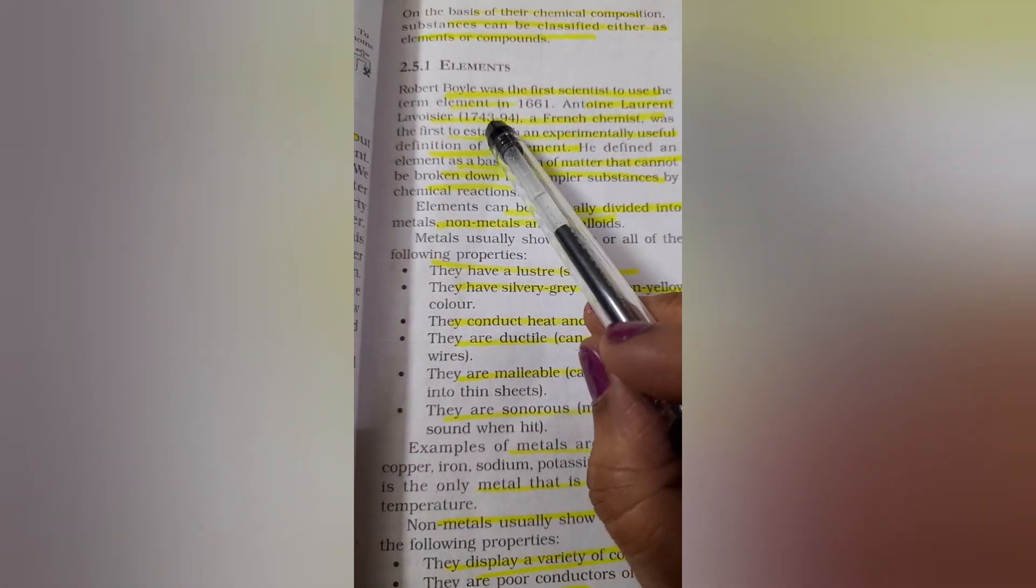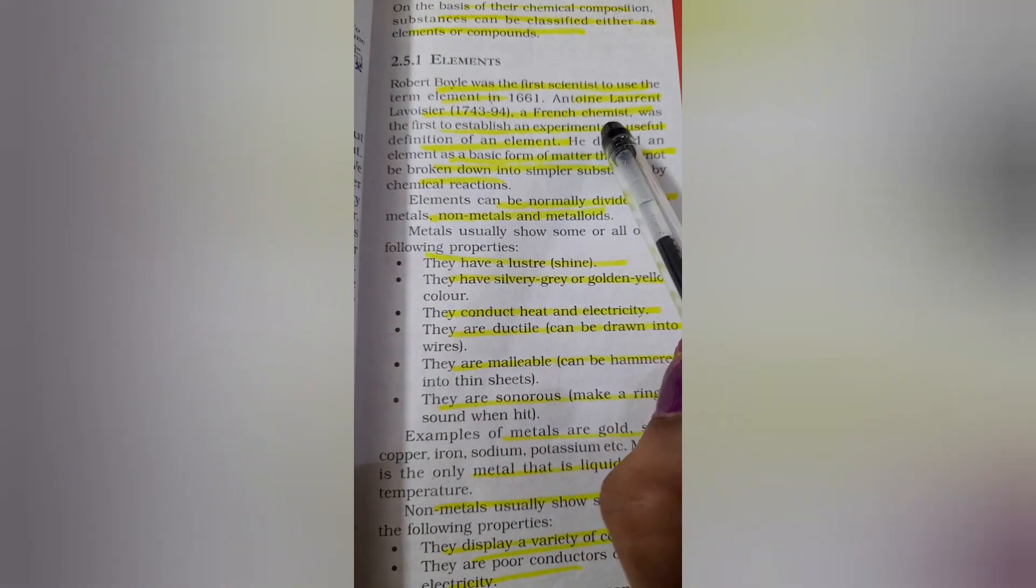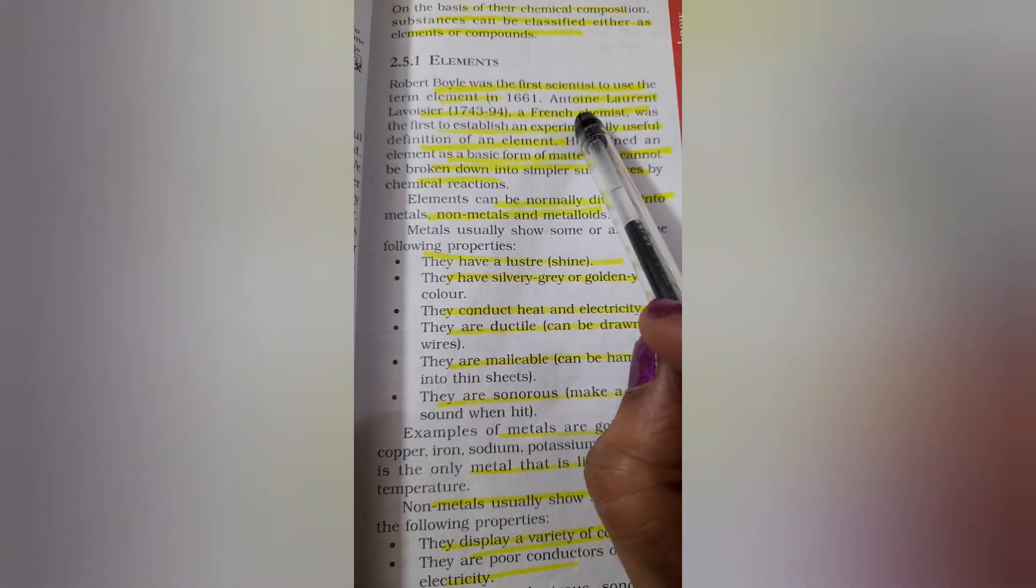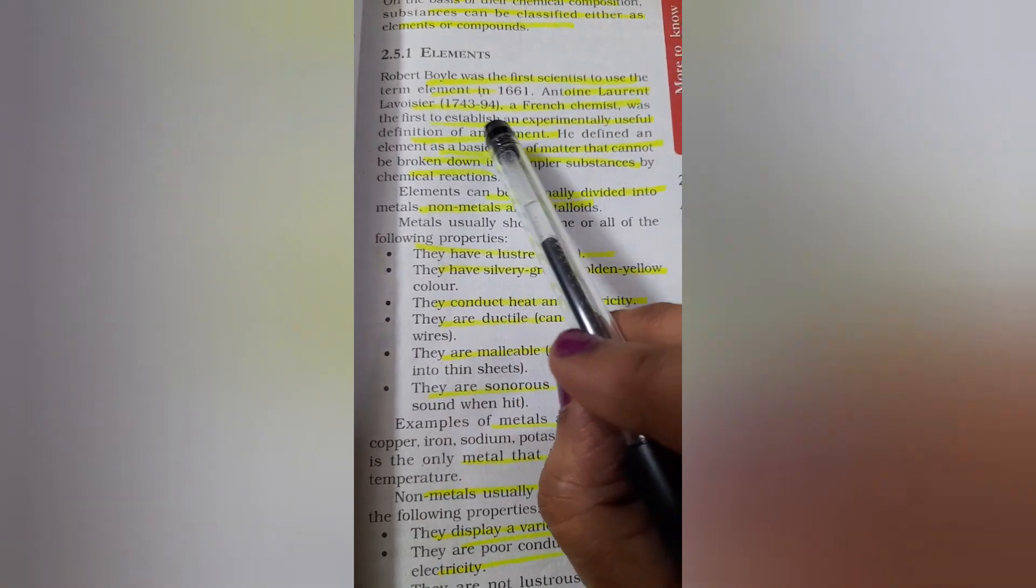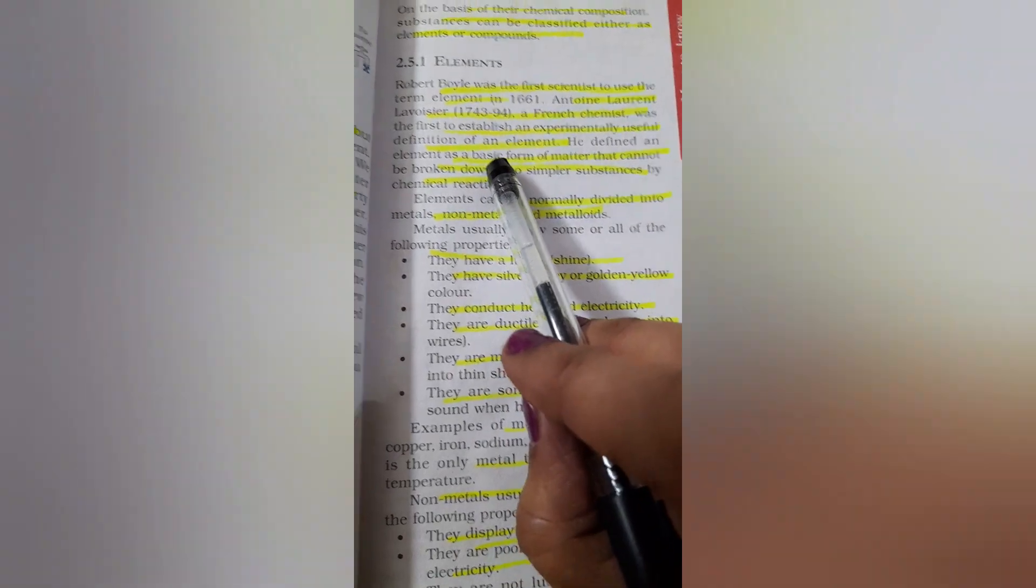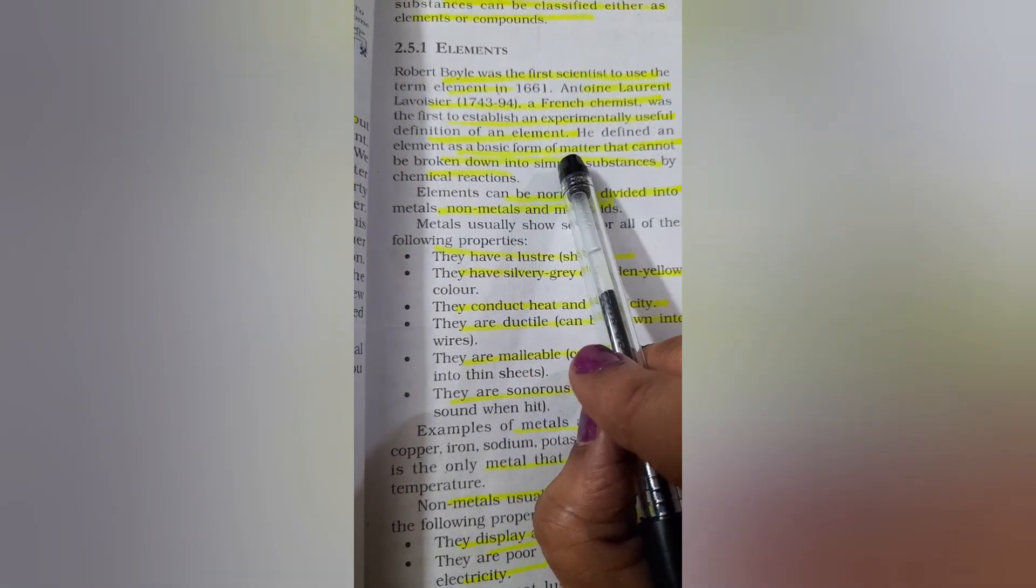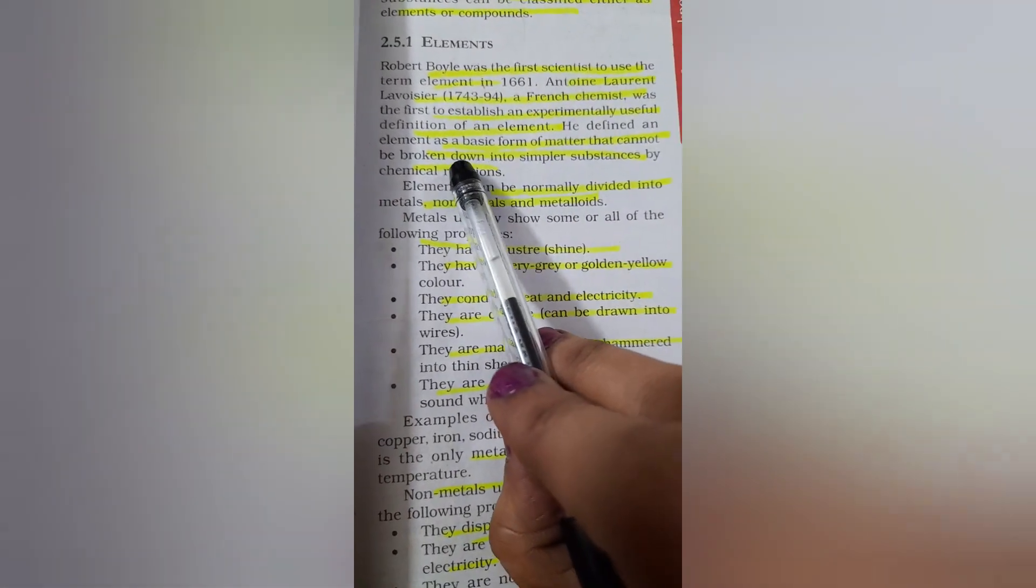The scientist called Robert Boyle was the first scientist to use the term element in 1661. Another scientist like Antoine Laurent Lavoisier, in the year 1743 to 94, was a French chemist. He was first to find out a useful definition of an element. How did he define an element?